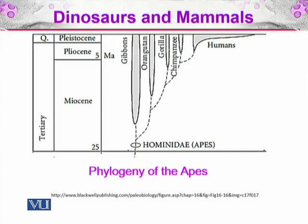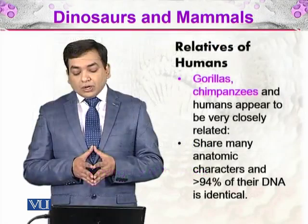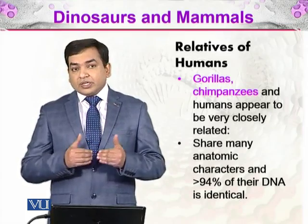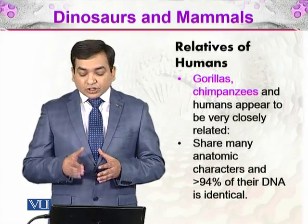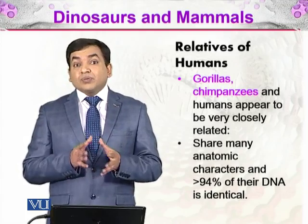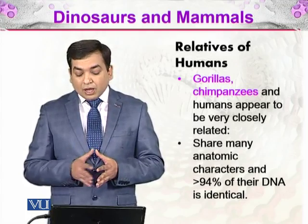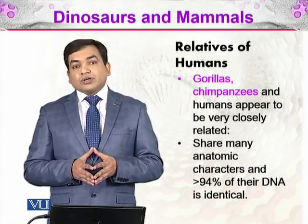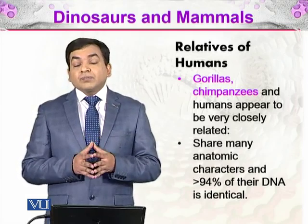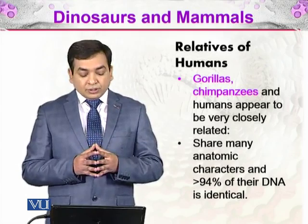The gorilla and chimpanzee are much closer relatives of humans compared to the orangutans and gibbons, as you can see from this phylogenetic tree. Gorillas and chimpanzees are relatives of humans and appear to be very closely related, sharing many anatomical structures. Their internal body structures are pretty much similar to humans, and more than 94% of their DNA is identical — not similar, identical — with humans.